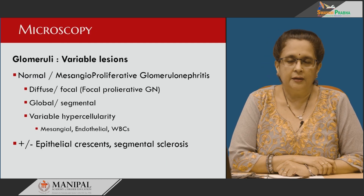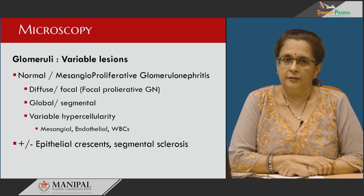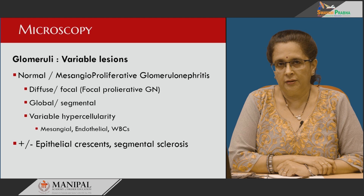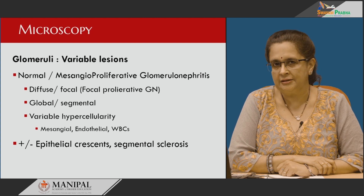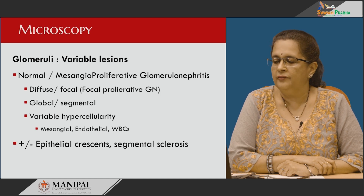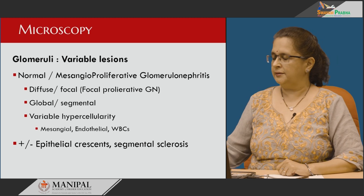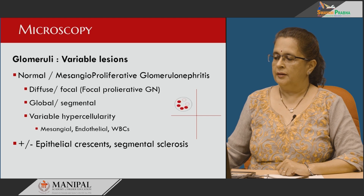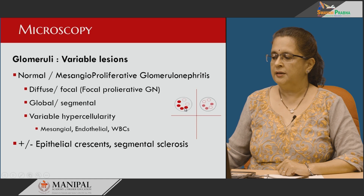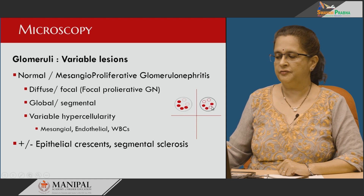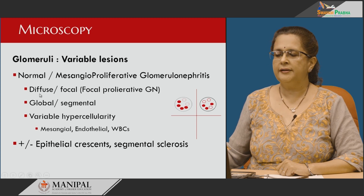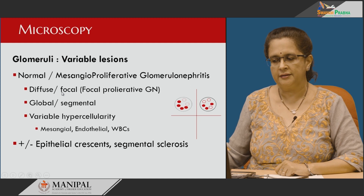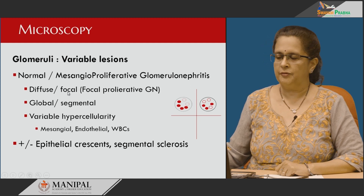Under light microscopy, the glomerular lesions are variable — not all glomeruli are affected similarly. The glomeruli can be normal or they can progress to mesangioproliferative glomerulonephritis, meaning proliferation in the mesangial region. If more than 50 percent of the glomeruli in a biopsy are involved, it is called diffuse; less than 50 percent is focal. Within each glomerulus, if the entire glomerulus is involved it is global; if less than 50 percent of the glomerulus is involved, it is segmental.